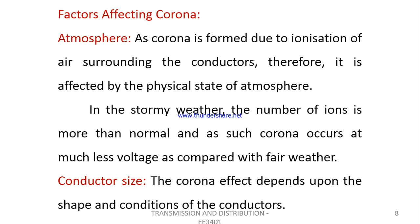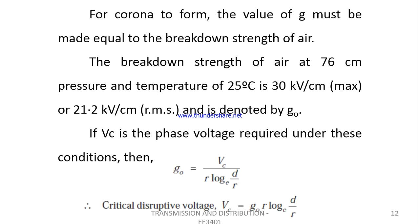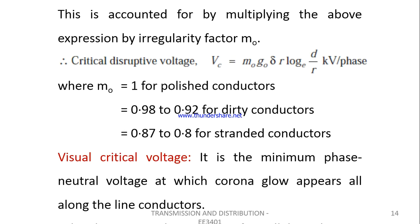Factors affecting Corona are: atmosphere, conductor size, spacing between conductors, line voltage, and critical disruptive voltage. The critical disruptive voltage is the minimum phase-to-neutral voltage at which Corona occurs. It is given by: G = V divided by R into log(D/R) volts per centimeter. When air density factors are considered, the critical disruptive voltage is: Vc = G0 · δ · R · ln(D/R), where δ is the air density factor.